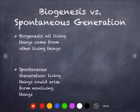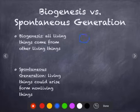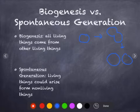The first thing we have to talk about is biogenesis and spontaneous generation. Biogenesis means that all living things come from other living things. So a cell replicates and eventually splits into two — cells come from pre-existing cells, which is part of our cell theory.